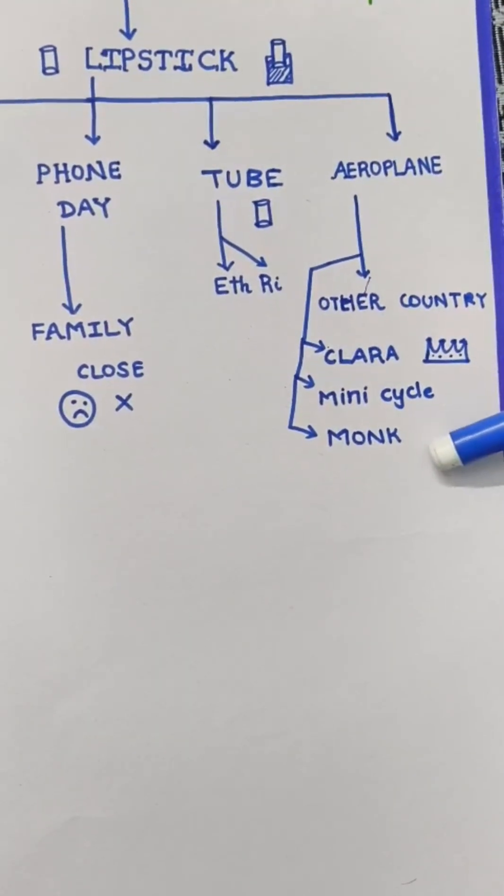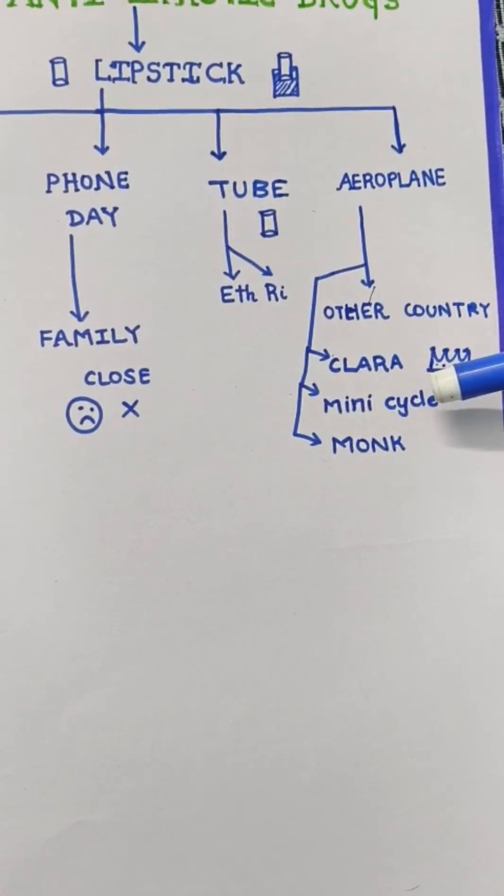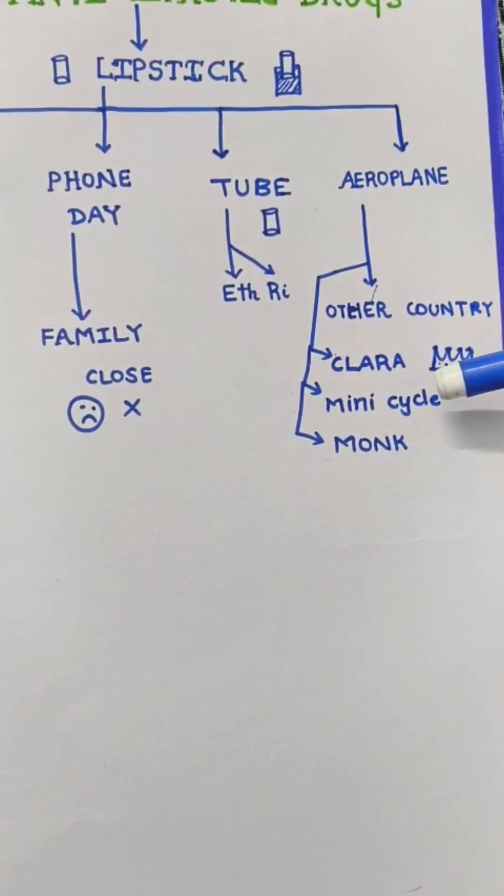There that girl became a monk and started riding a mini cycle, traveling the whole country teaching people not to use mobile phones.